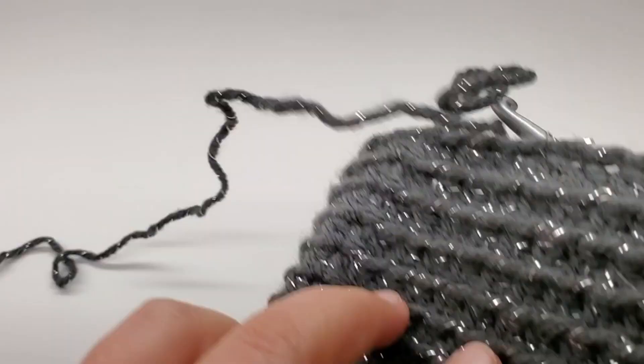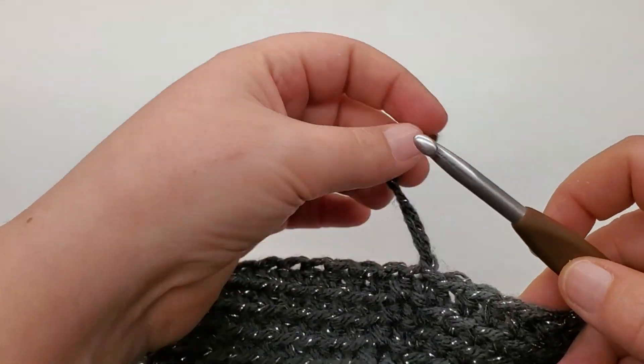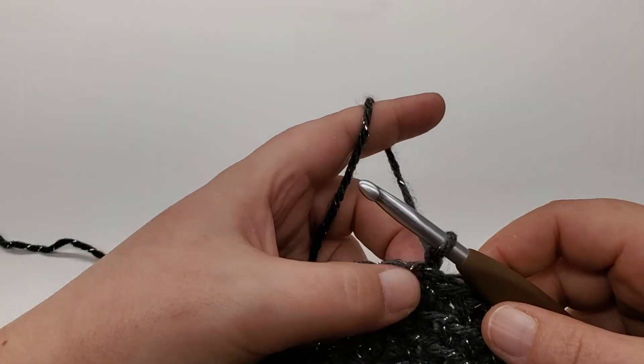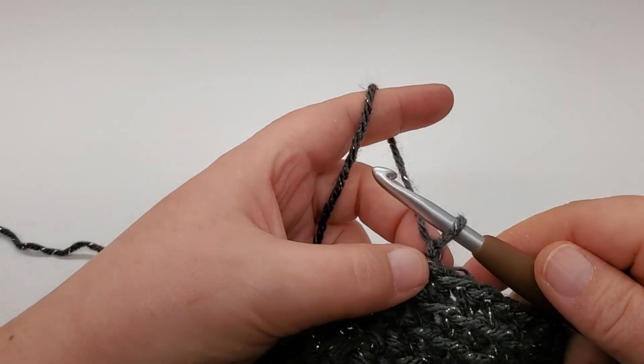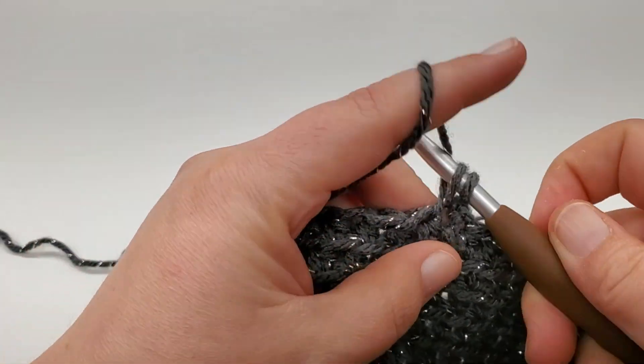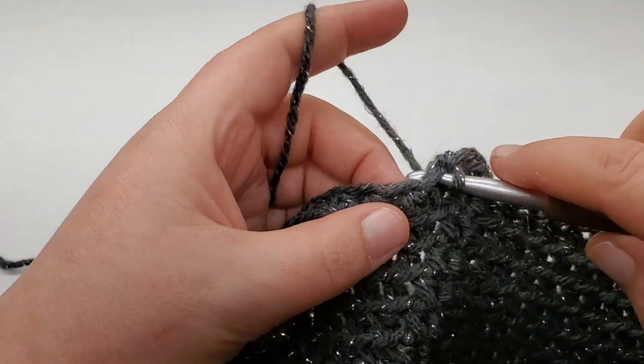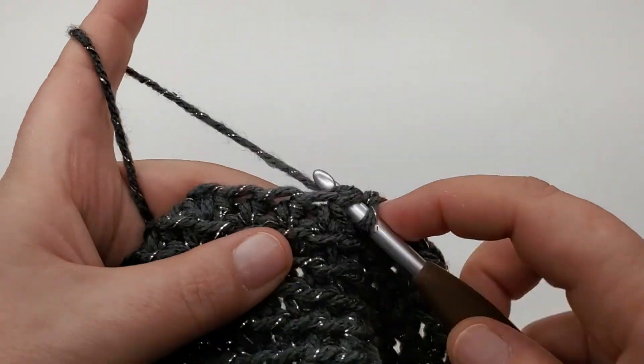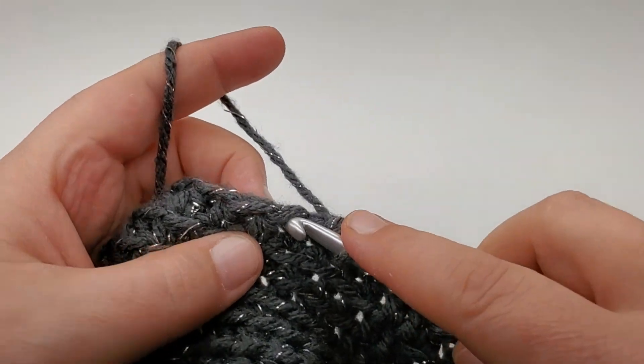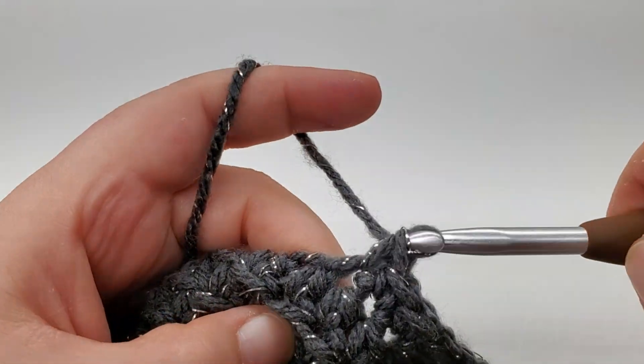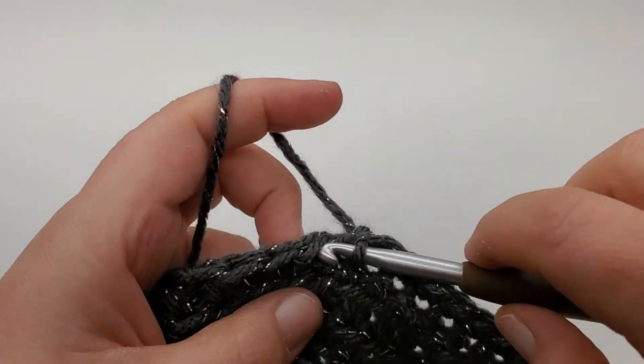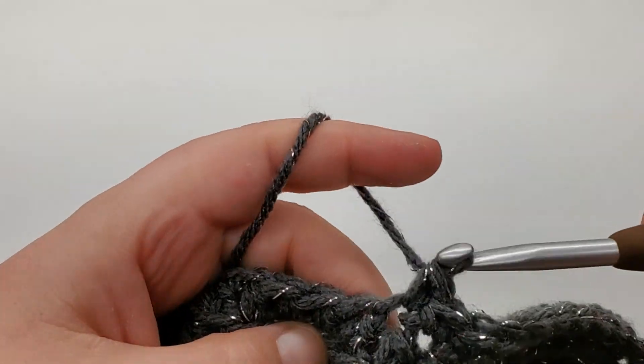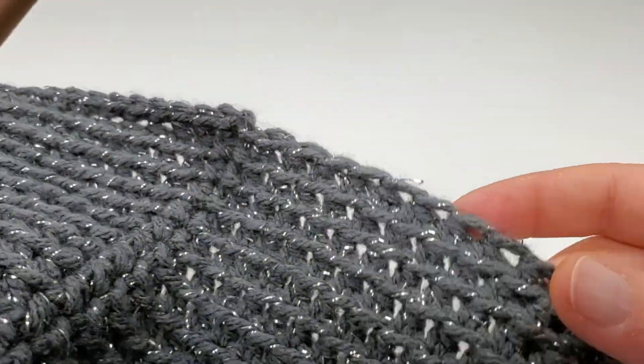So what we're going to do, I already slip stitched to my first back loop half double. So all I want you to do is slip stitch to your first back loop half double, chain one. And all we're going to do is just work a single crochet all around, going through both loops. Work that around in every stitch. Keep working that all around, and I'll meet you back at the beginning.